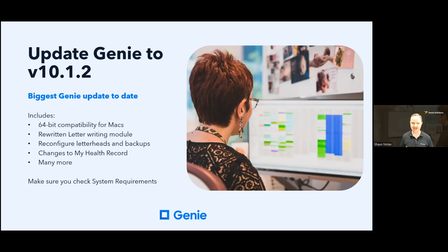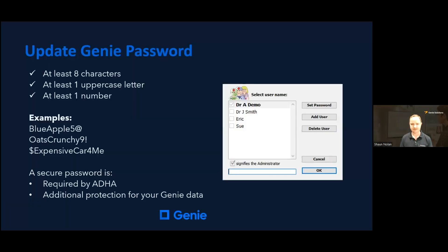There are a significant number of other changes in this Genie update, but also a few things practices need to do in addition to the update. We will be sending this information in an email after the presentation. You will need to ensure you reconfigure your practice letterhead and your user preference letterheads — existing letter templates should be unaffected. You will need to reconfigure Genie backups as the way backups are handled inside Genie has changed. If you use My Health Record through NASH certificates, there's a transition needed to SHA-2 certificates. It is also recommended your computer hardware is checked to make sure it meets our system requirements.